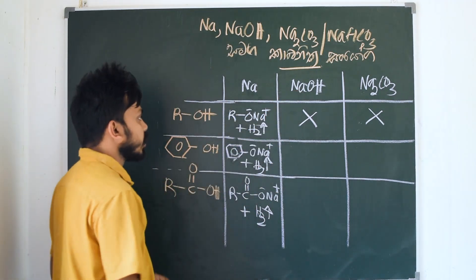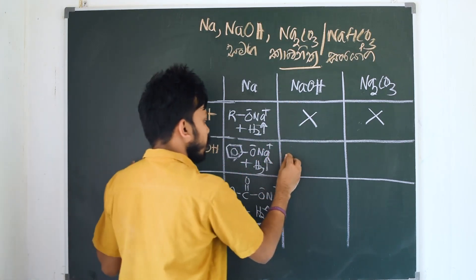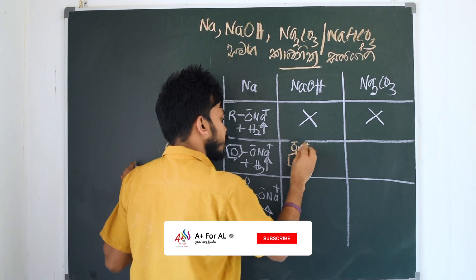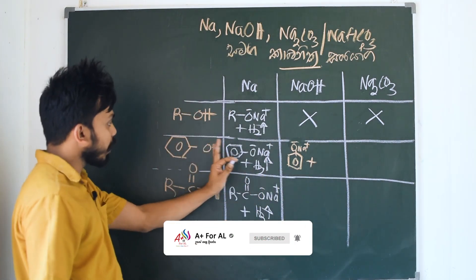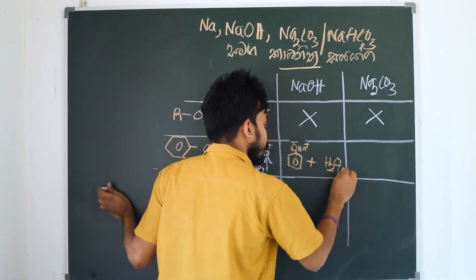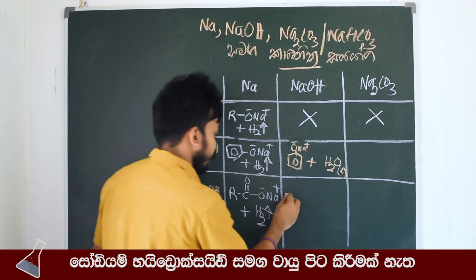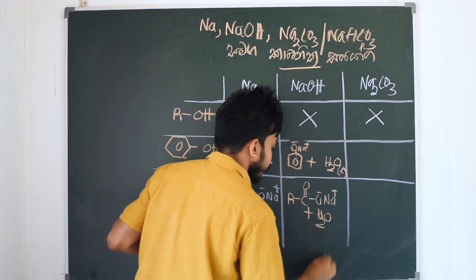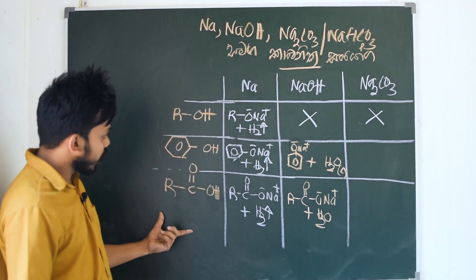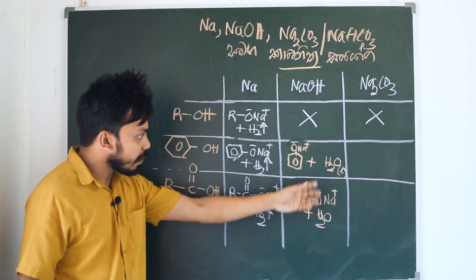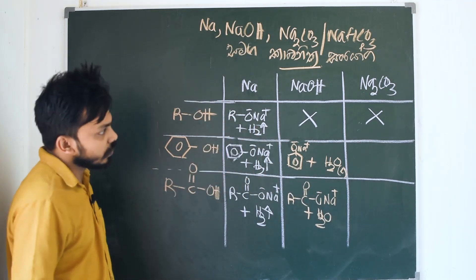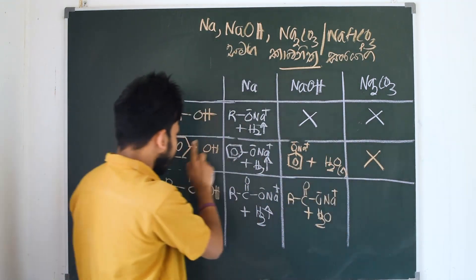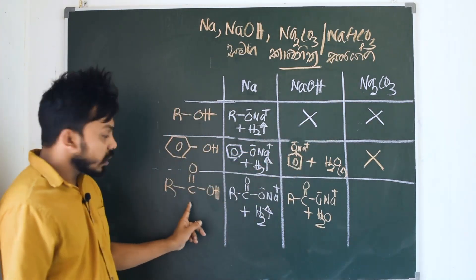So let's look at sodium hydroxide. Then we can add Na plus O minus Na plus. Then we can add methane. This is Rc double bond O minus Na plus. So we can add sodium hydroxide. These will result in carbon salts.